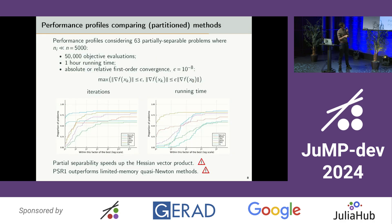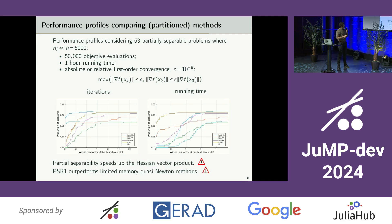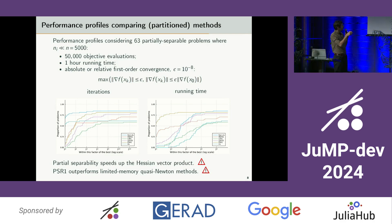Now let's look at some performance profiles made on 63 partially separable problems of size 5,000. Those problems cannot run for more than 50,000 objective evaluations or more than one hour, and we consider them solved if they reach either an absolute or relative first-order convergence. In terms of iterations, the Newton methods HV and Part-HV usually make fewer iterations than the other methods. The partition Quasi-Newton methods and limited-memory Quasi-Newton methods follow. But looking at running time, the partition Quasi-Newton methods are more efficient than any other methods, especially PSR1.